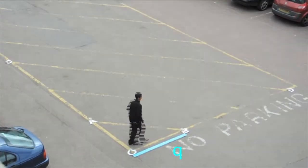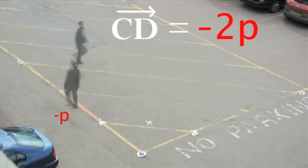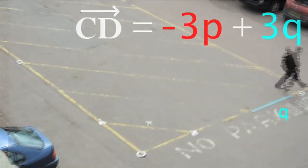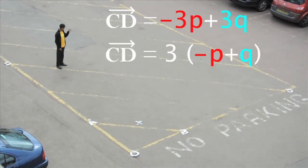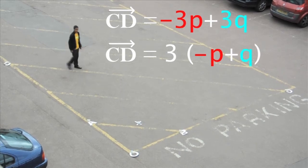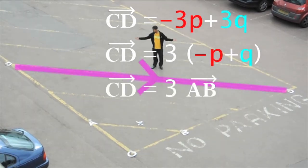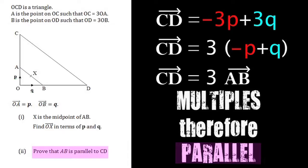Well o to c is minus 3p. O to d is 3q. So that's minus 3p plus 3q. Wait, wait, wait, hold up. That's 3 times minus p plus q. And minus p plus q is what the vector a to b was. This signs are multiple of that one and that proves they're parallel. All out O type mission. A star.